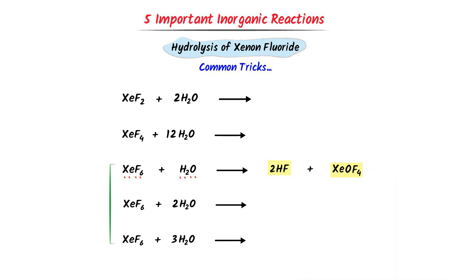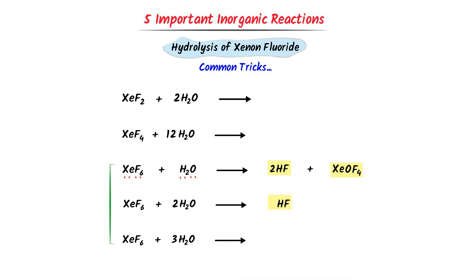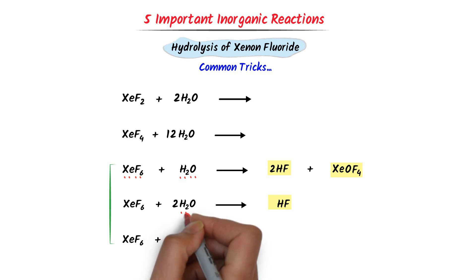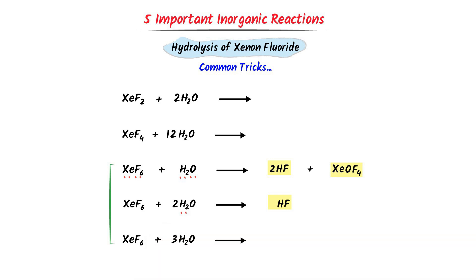These are the products of the third reaction. Now I will repeat this trick for the fourth and fifth reactions. In the fourth reaction, I write hydrogen fluoride. In the reactants there are 2×2 = four hydrogen atoms, so I put four with hydrogen fluoride. For the second product: there is one xenon in the reactant and two oxygen — I write O₂.